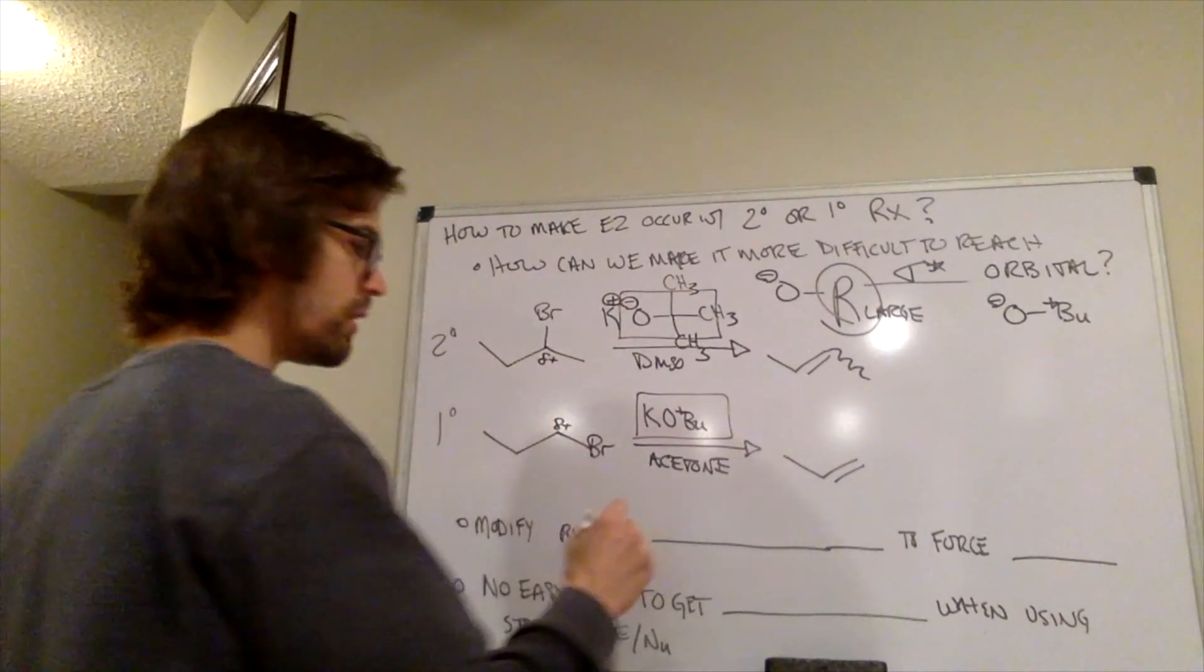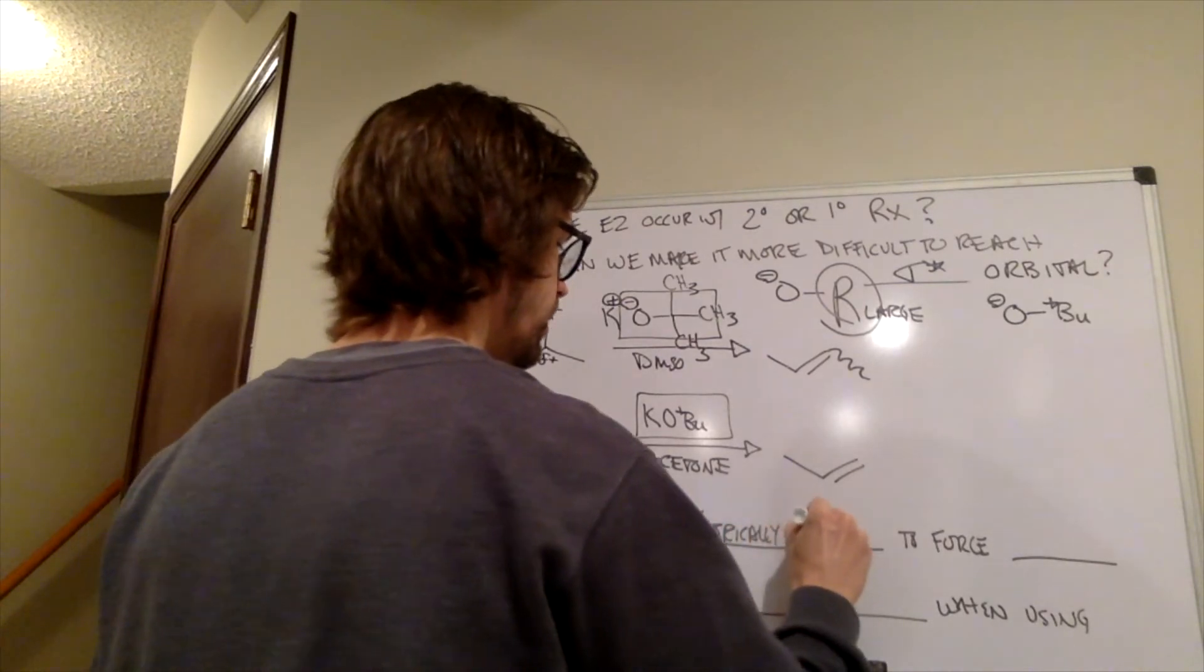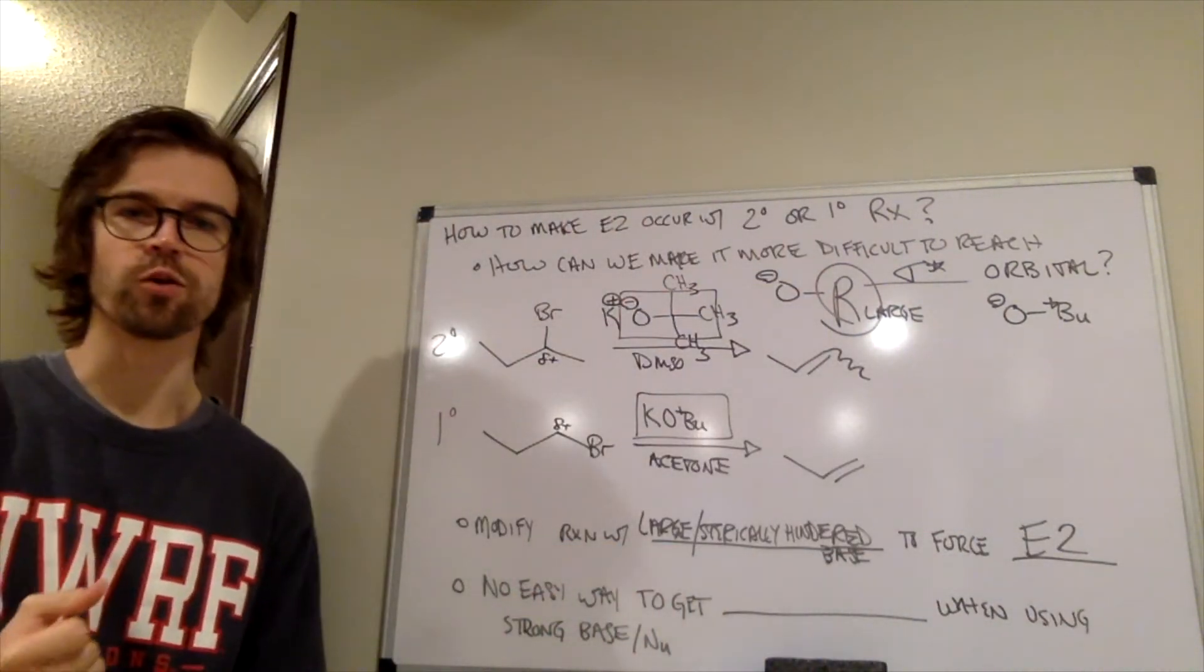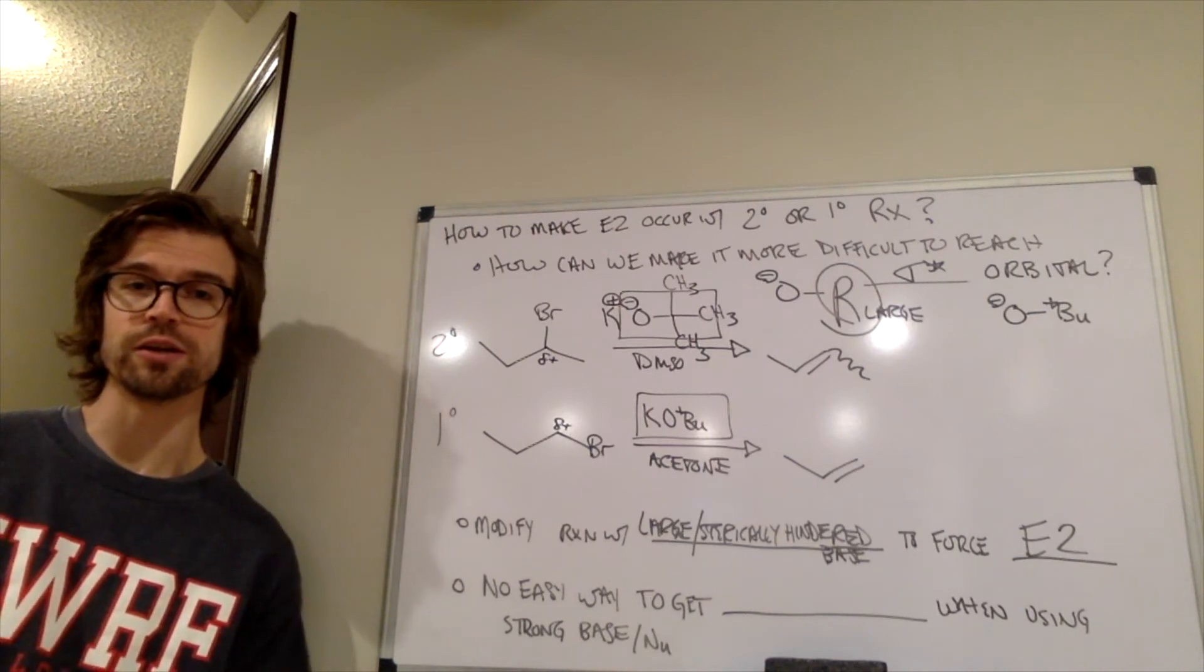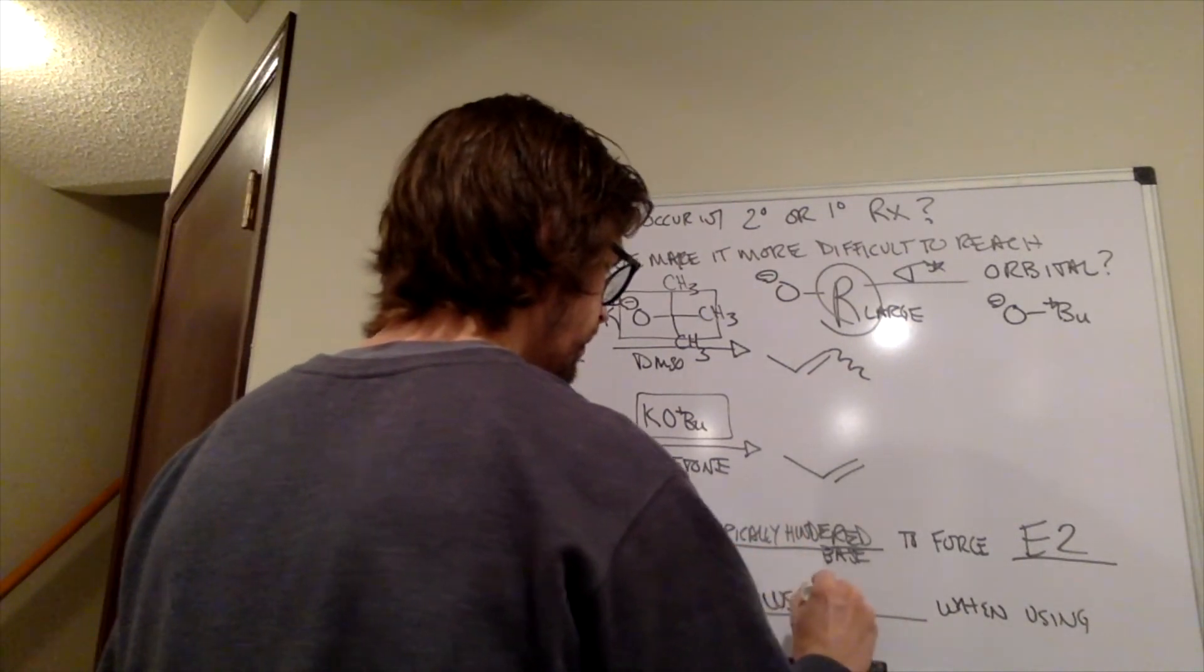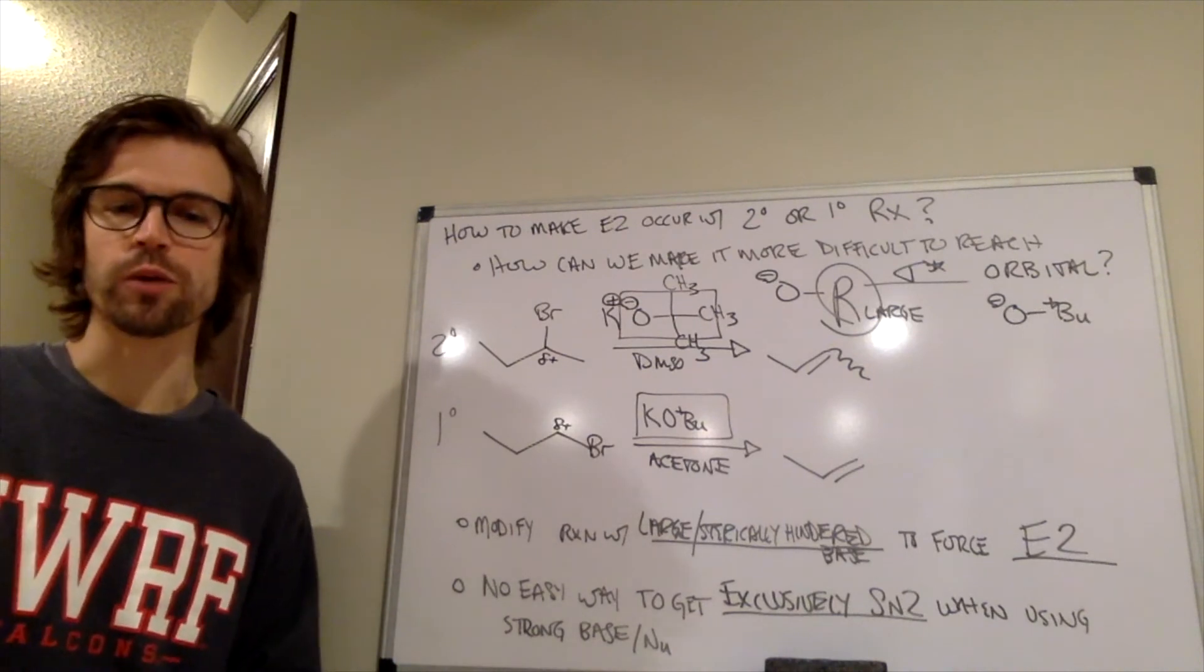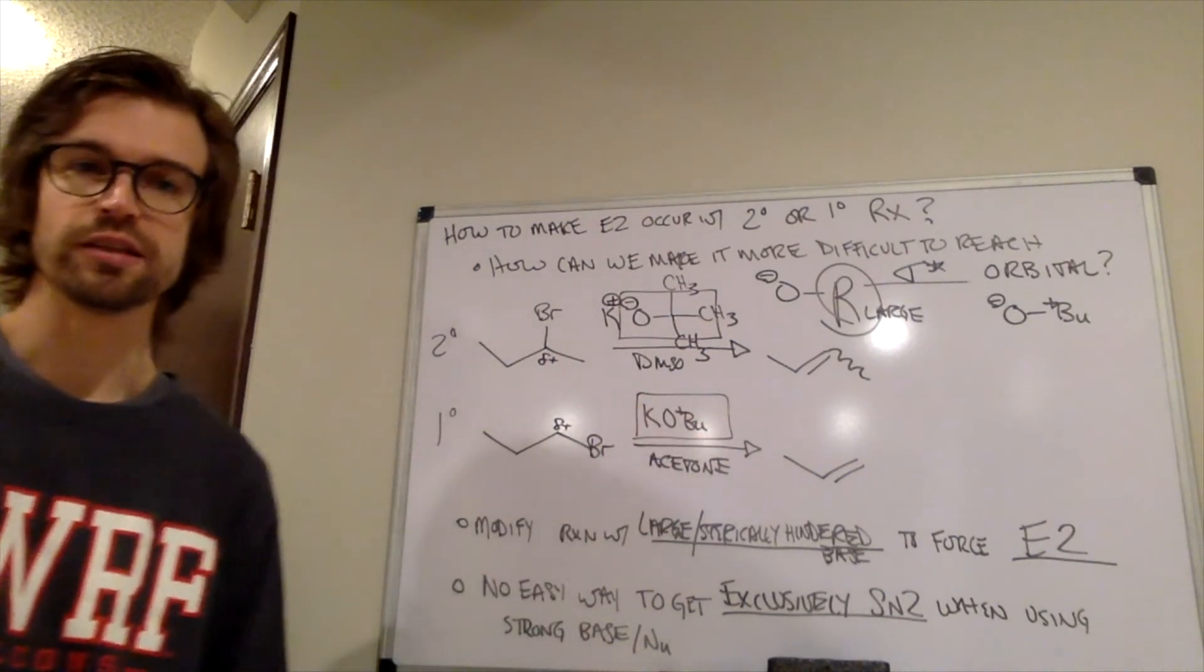Those are going to force E2. So if we modify the reaction with a large, sterically hindered base, we're modifying the reaction by using a large, sterically hindered base. It's going to force E2 because it can't reach that antibonding orbital. The other thing is, how can we force E2? Well, is there a way to force SN2 with a really substituted alkyl halide? And the answer is no, there's no easy way to get exclusively SN2 when using a strong base and a strong nucleophile. It's going to be dependent on the substitution pattern. But we do have this really large base where we can force E2 if we would want to. So that is really useful because sometimes we might want to do an elimination and not have the substitution byproduct.